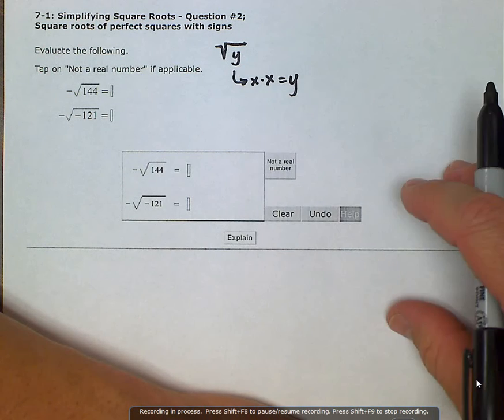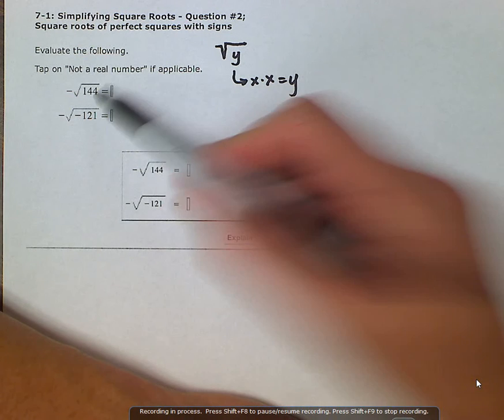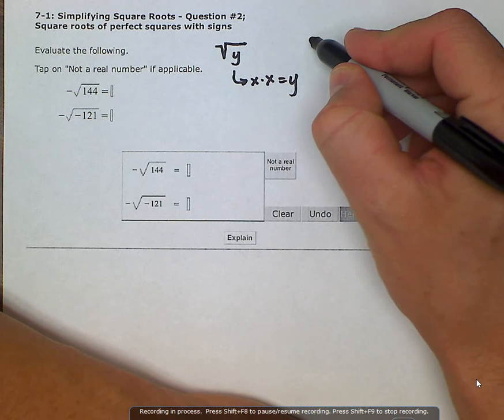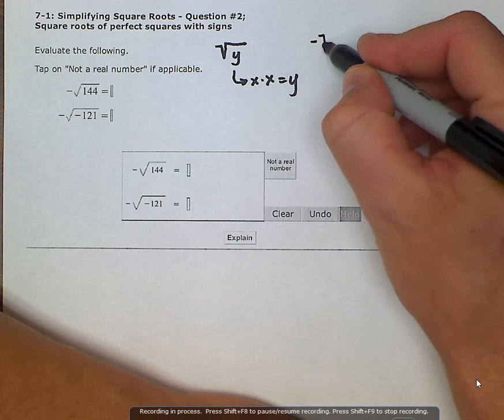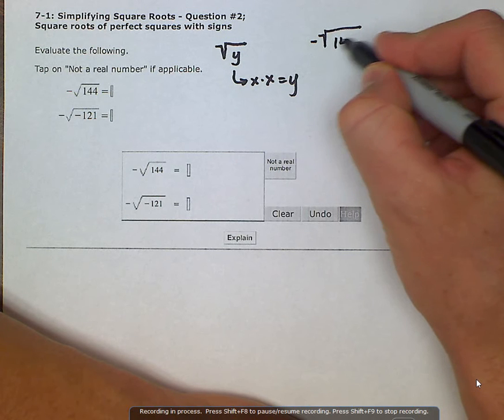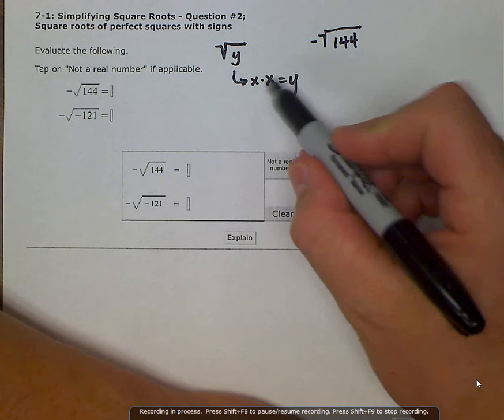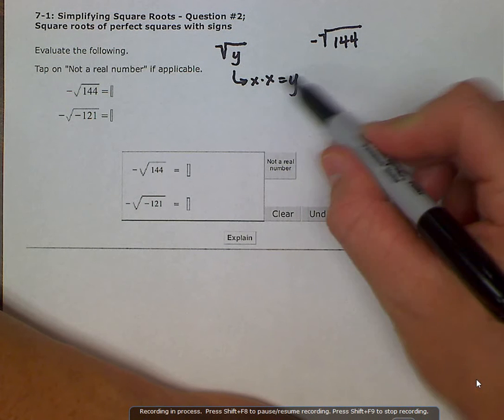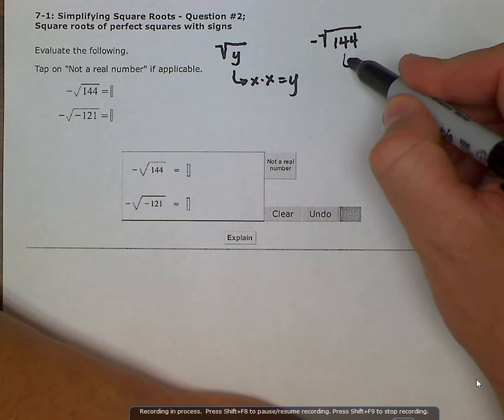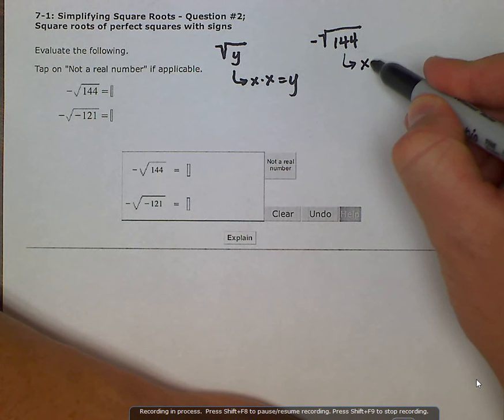So if I'm looking and I see 144, let's evaluate this negative square root of 144. We're looking for some number when multiplied by itself that equals 144. x times x is equal to 144.